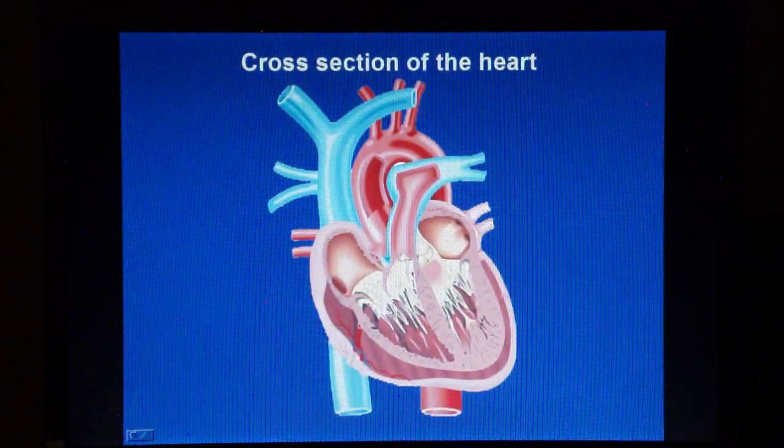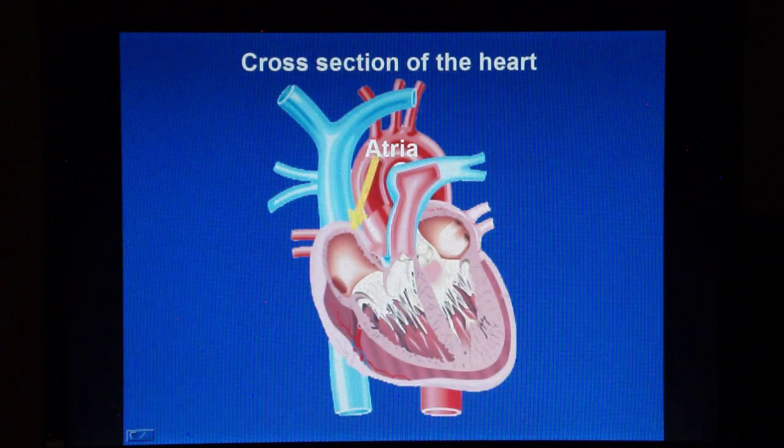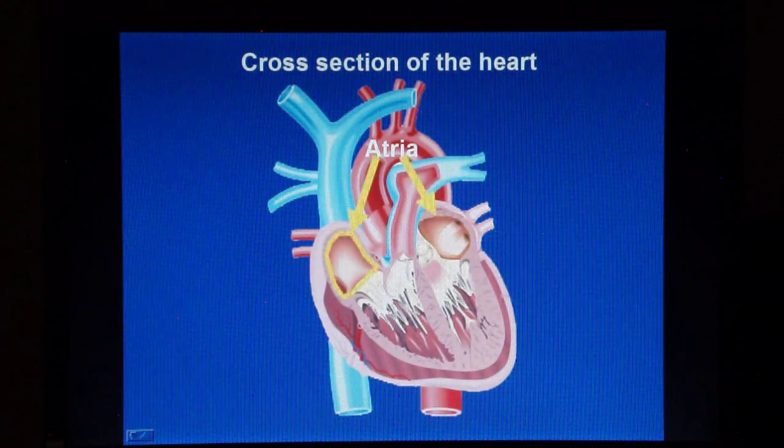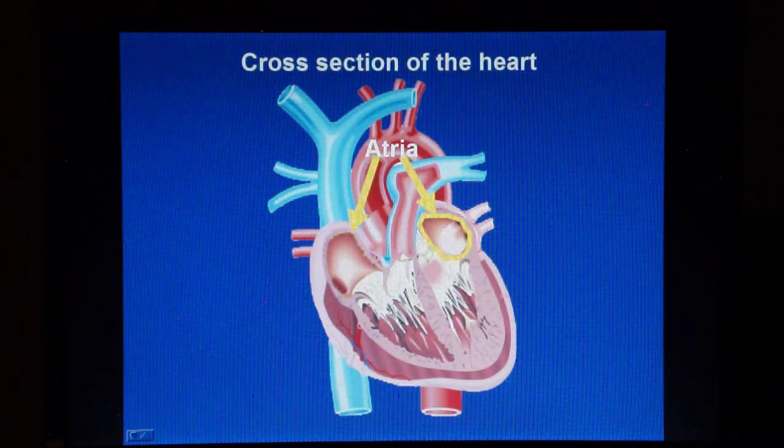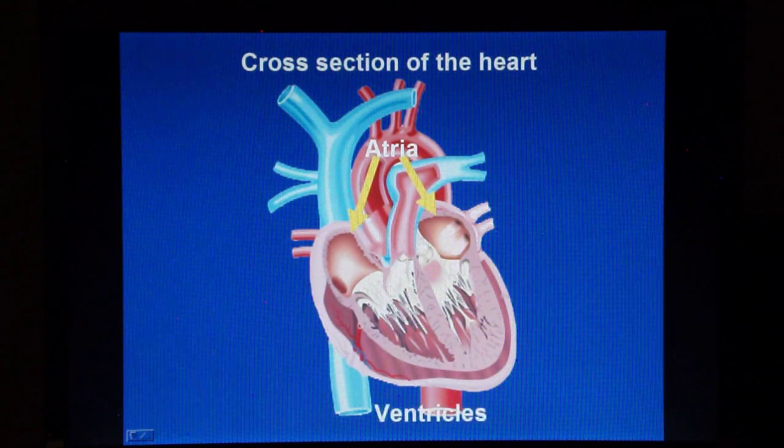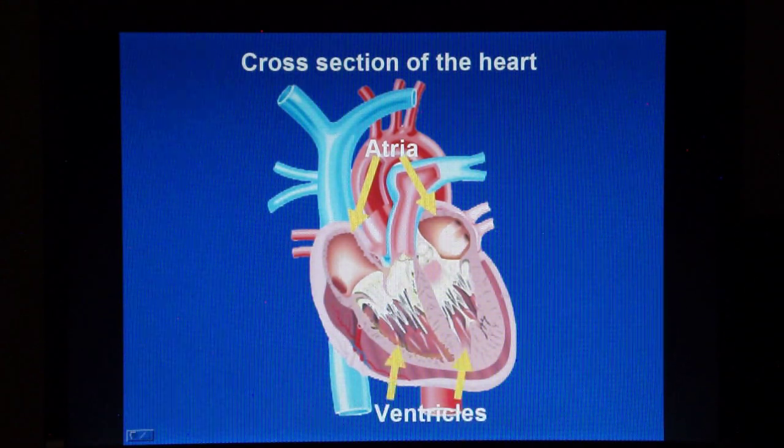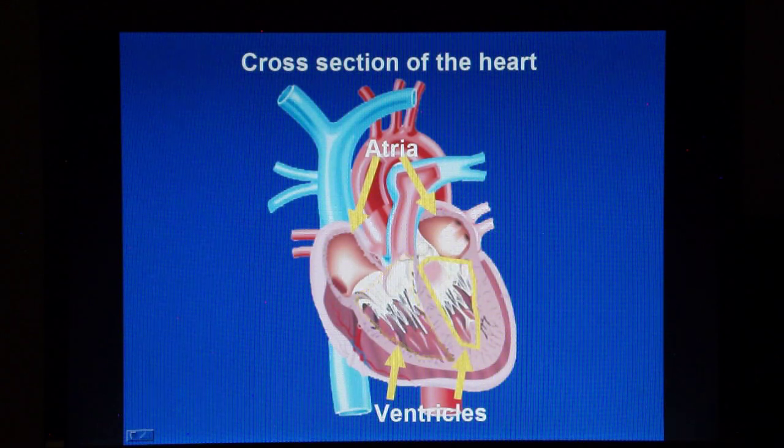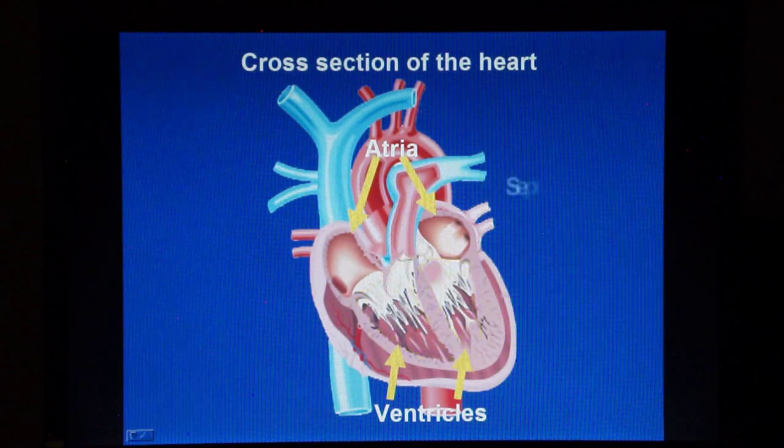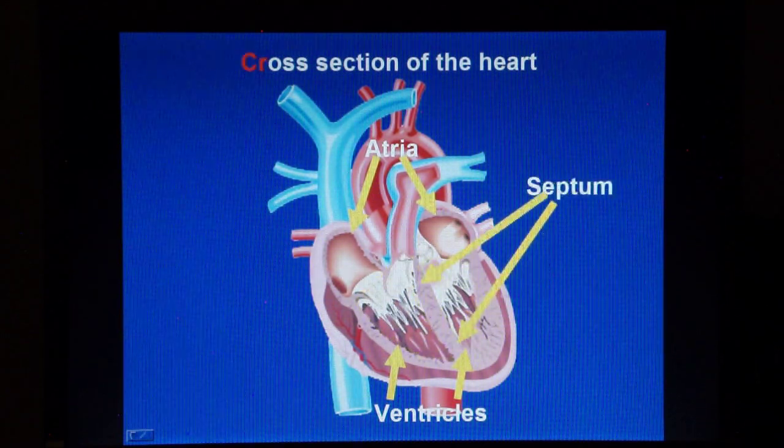The heart consists of four chambers, two atria and two ventricles divided by the septum.